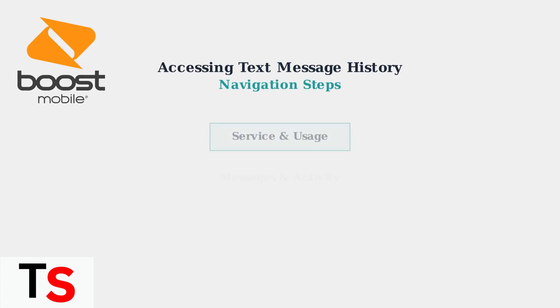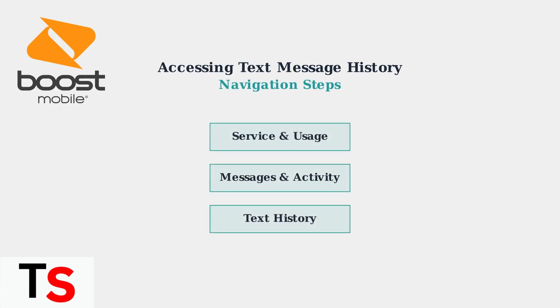Once you're in the app or on the website, look for sections labeled Service and Usage, Messages and Activity, or Text History. These sections contain your messaging information.